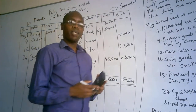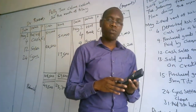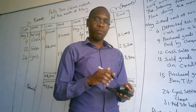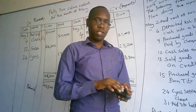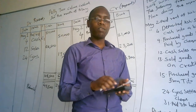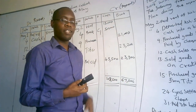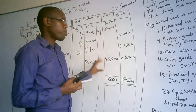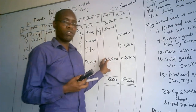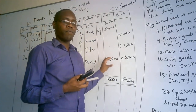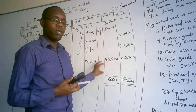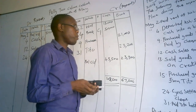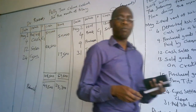That is how we prepared the two-column cash book. In our next revision, we are going to touch on the three-column cash book, which will include an element of discount. We will do a three-column cash book covering those particular discounts. Enjoy this revision and prepare for the exam. Thank you.